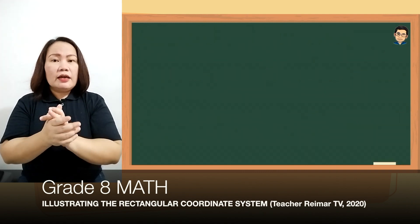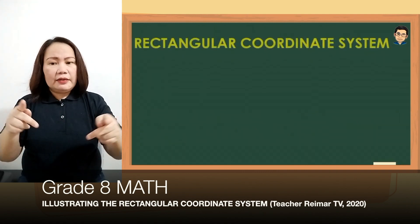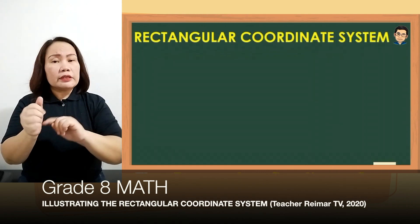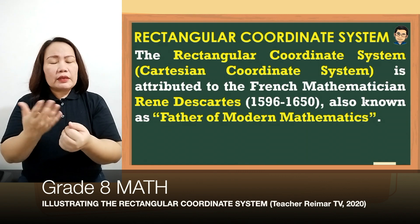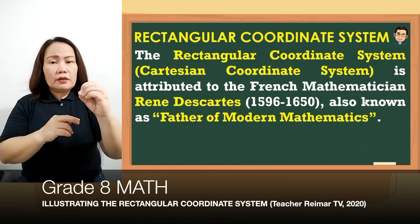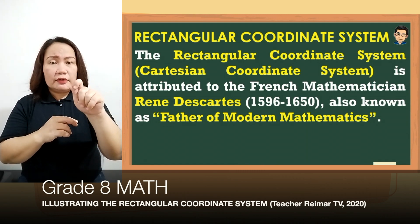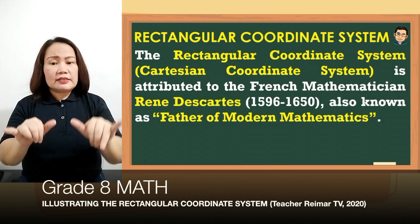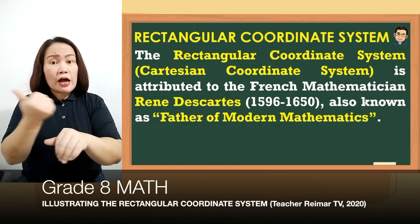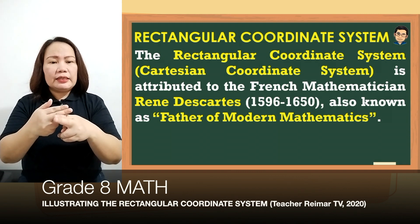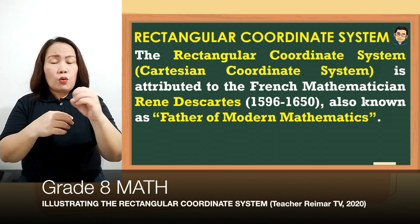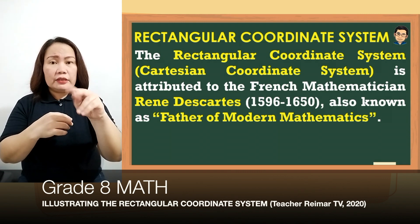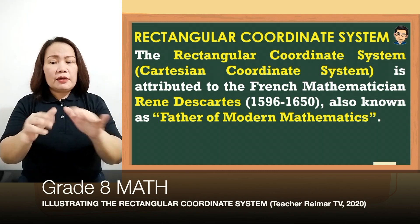The rectangular coordinate system, also known as the Cartesian coordinate system, is attributed to the French mathematician René Descartes, also known as the Father of Modern Mathematics.